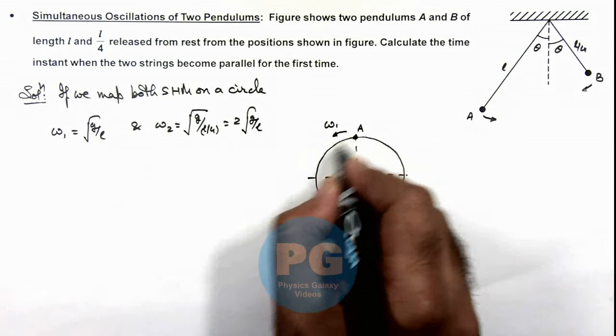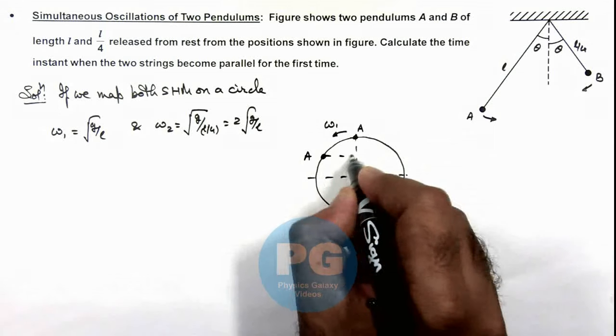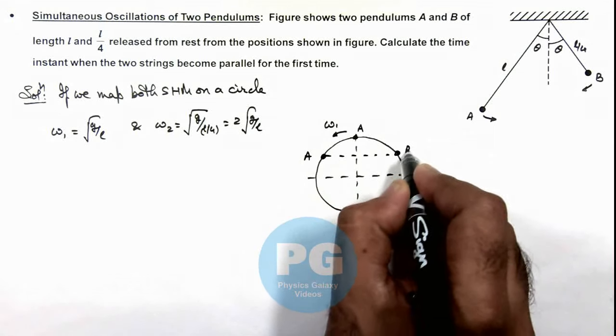So say somewhere here when A reaches on the same line, B also reaches here.